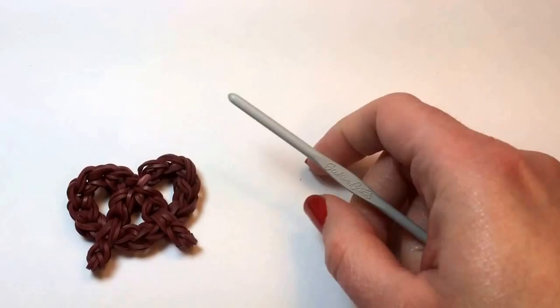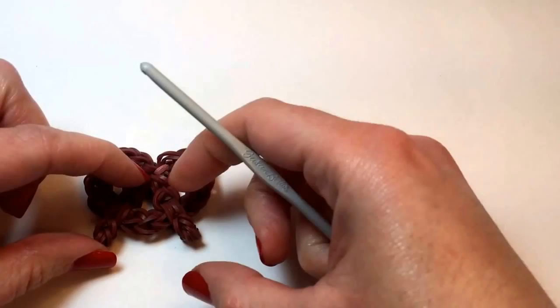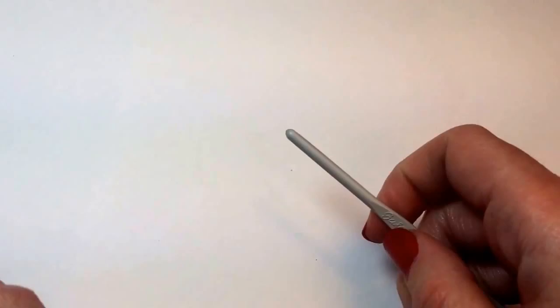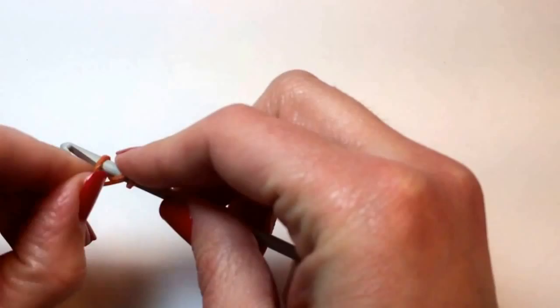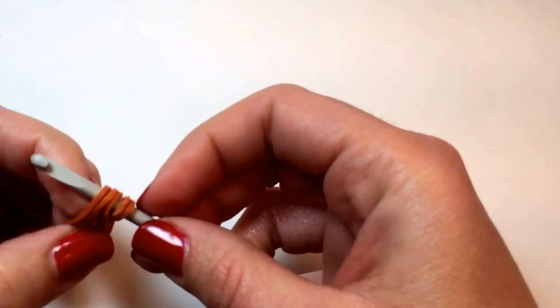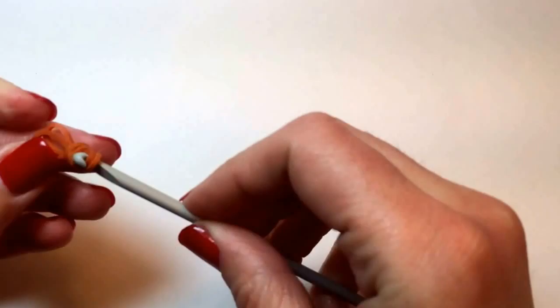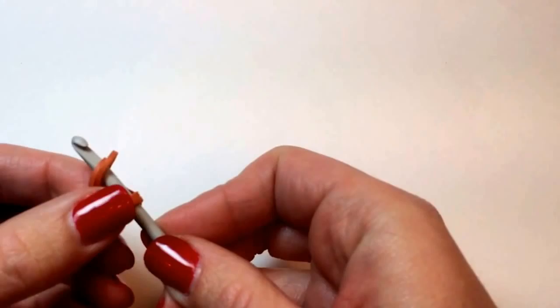To start, we're going to make the two short sides of the pretzel that go to the middle, and we're going to start with a single rubber band that we wrap around our hook three times. Then take two rubber bands, pull it straight, and push that tripled over band to the center and place the opposite side on your hook again so that it looks like this.